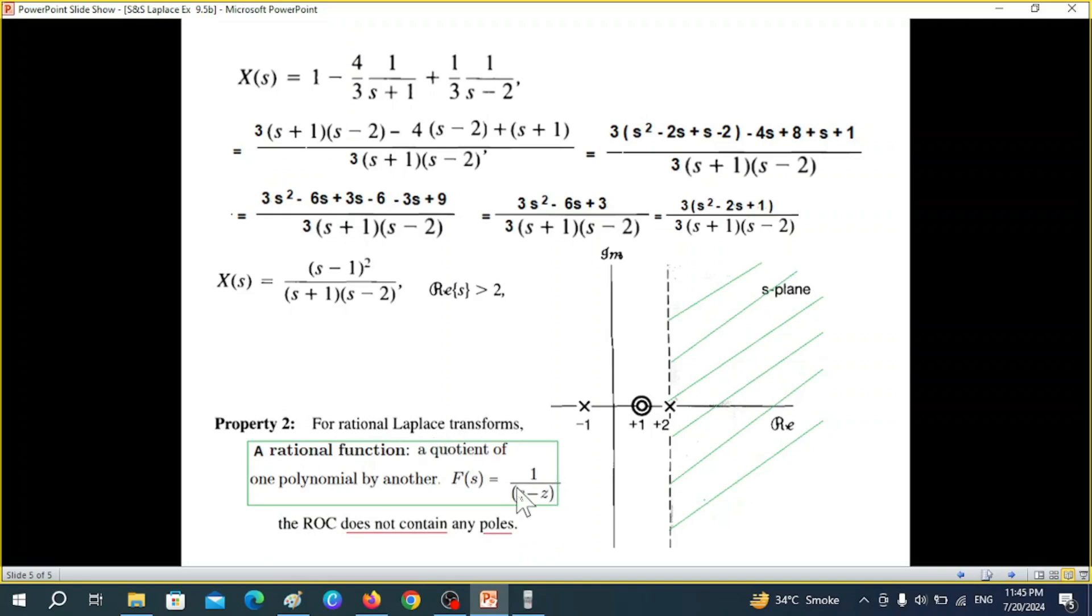Okay just one point. There are several properties which you can study from the book. One of the properties says that the rational function or rational Laplace transform. Now rational is something in the form of quotient form. One polynomial divided by another polynomial. The ROC does not contain any poles.